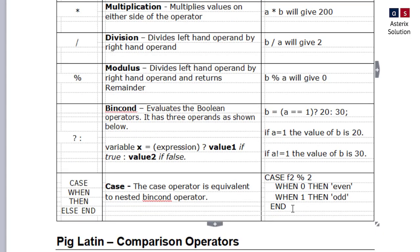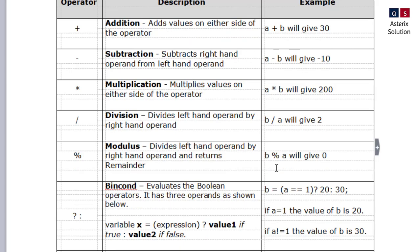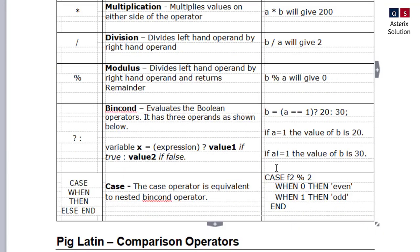Then you have case-when-then with end part. You can see the example here: if my number mod 2 is 0, then it says even, or else it says odd, and then it ends there. Pig Latin also has the list of arithmetic operators.